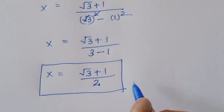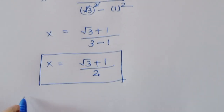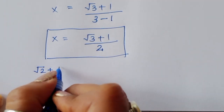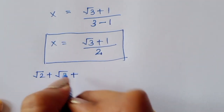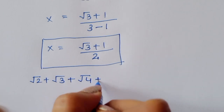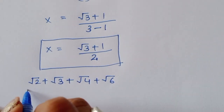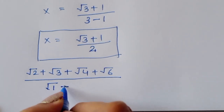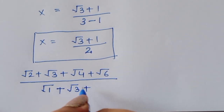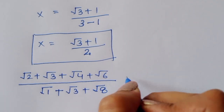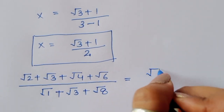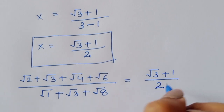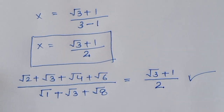So our final answer: the expression square root of 2 plus square root of 3 plus square root of 4 plus square root of 6, divided by square root of 1 plus square root of 3 plus square root of 8, is equal to square root of 3 plus 1 divided by 2. This is the solution. Thank you.